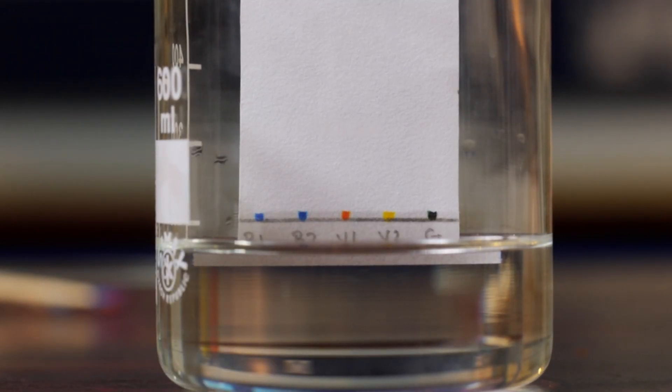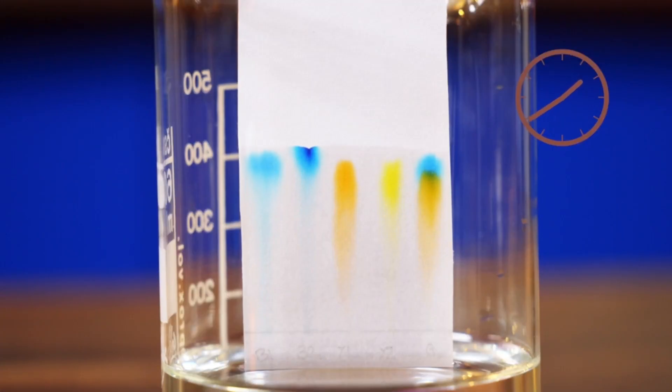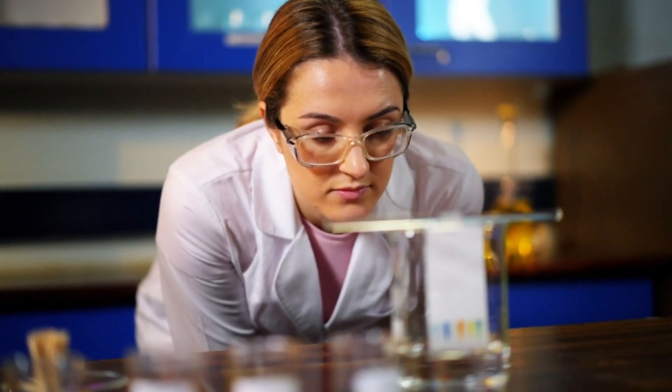You will notice that the paper absorbs the water and it rises up the chromatography paper past the spots of food coloring. When the water reaches the spots, the pigments will dissolve in the water and move up the paper.